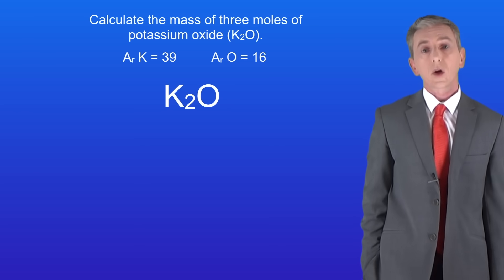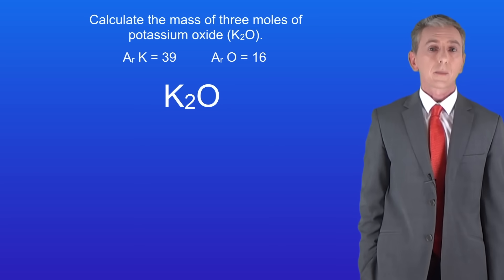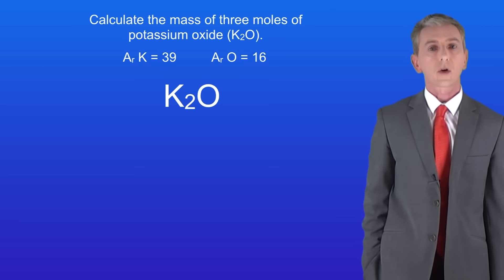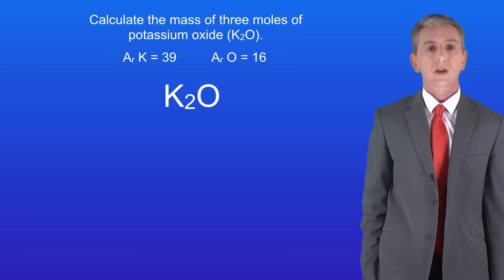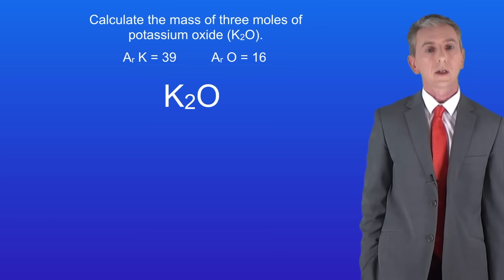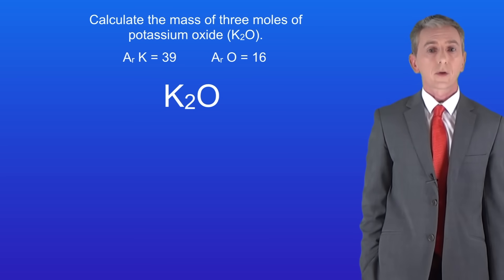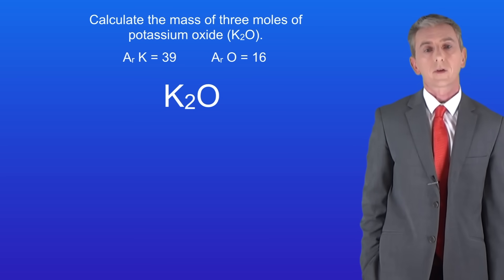Here's a question for you to try: calculate the mass of three moles of potassium oxide. The formula of potassium oxide is K₂O and I've given you the relative atomic masses that you need. You should pause the video now and try this yourself.